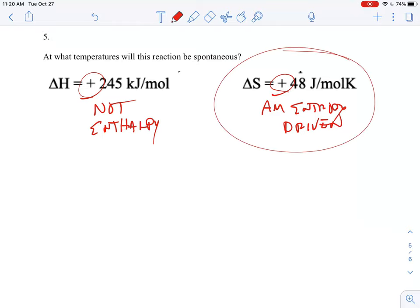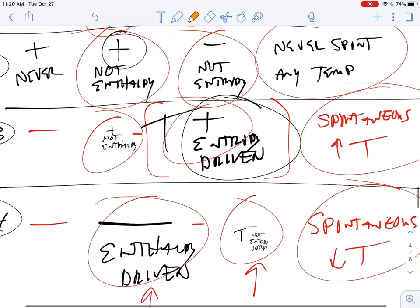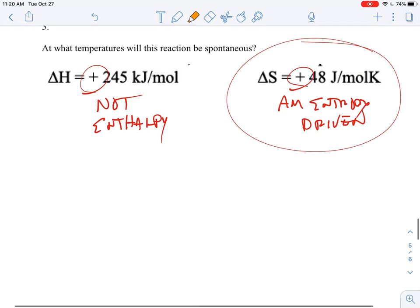If I am being driven by the entropy, and we go back to our circumstances, a positive positive is only going to be spontaneous when our temperatures are very high. The question then becomes, what constitutes as being high?